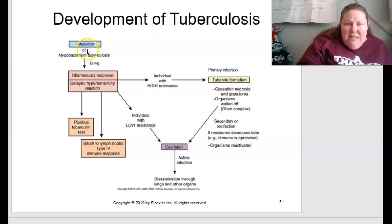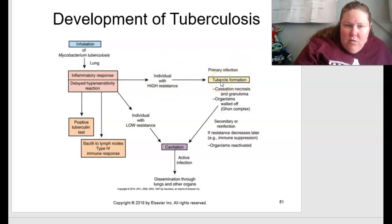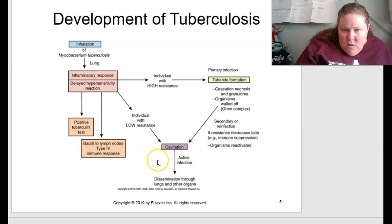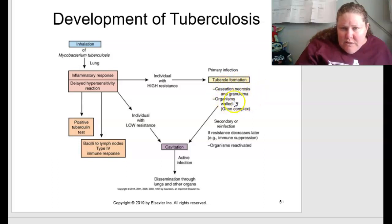Figure 13.12 on page 291 shows the development of TB: inhalation of M. tuberculosis leads to an inflammatory or delayed hypersensitivity response. Individuals with high resistance develop a primary infection with tubercle formation; a positive TB test can occur and bacilli travel to lymph nodes with a type 4 immune response. Individuals with low resistance can develop cavitation and active infection, with dissemination through lungs and other organs. If the tubercle undergoes necrosis and granuloma formation, organisms are walled off (Ghon complex). If resistance decreases later due to immune suppression, organisms can be reactivated.